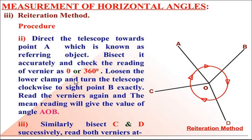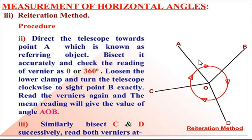Then loosen the lower plate clamping screw and turn the telescope clockwise to sight the ranging rod at point B. Turn the telescope clockwise and sight the ranging rod at point B. Sight B exactly by using the lower plate clamping screw. Then read the vernier again, and the mean reading will give the value of angle AOB. When B is sighted, we have to read vernier A as well as vernier B, and the mean of the two verniers will be the value of angle AOB.